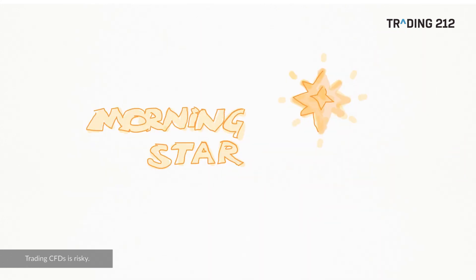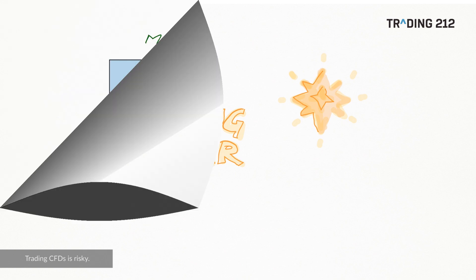Our third pattern is morning star. So the morning star is a bottom reversal pattern, and it gets its name because as the morning star in the sky in the east precedes the sunrise,